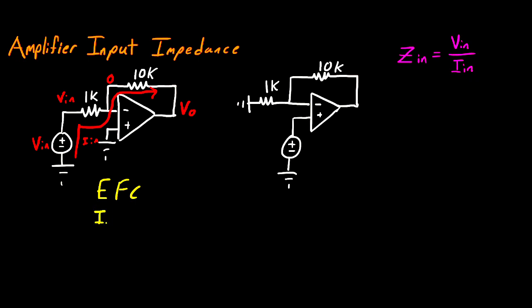And that equation is going to be I in is equal to the potential across it, V in minus zero, divided by the resistance of 1,000 ohms. So the next thing I have to do is rearrange this so that I can get V in divided by I in. So if I rearrange that to have V in divided by I in, I'm left with an input resistance of 1,000 ohms.